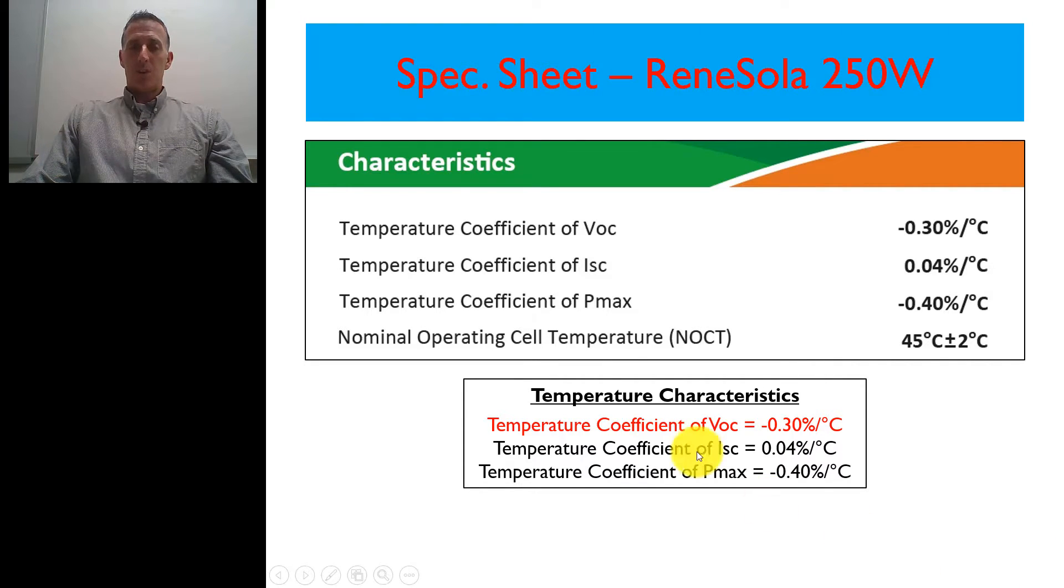This temperature coefficient right here is telling us for every degree Celsius that we change, it's negative, which means for every degree we go above 25 degrees Celsius, the voltage changes or decreases by a negative 0.3%. So we're not interested in the increase, we're interested in the decrease, the decrease of temperature.